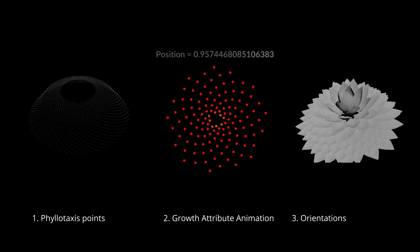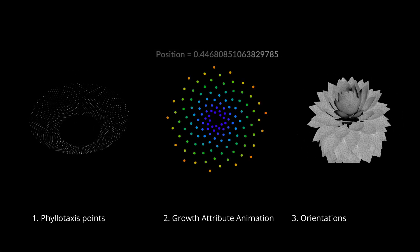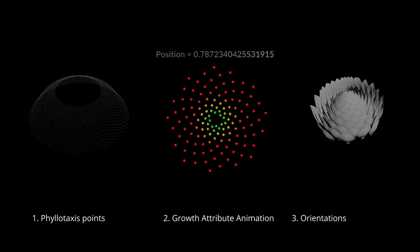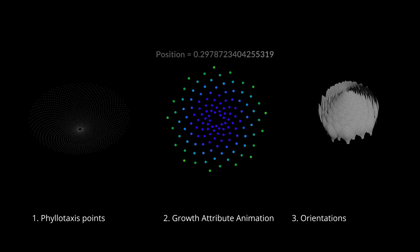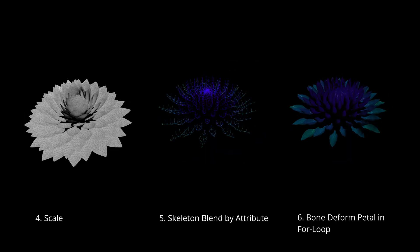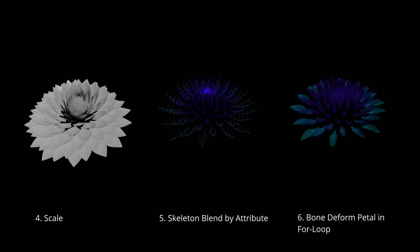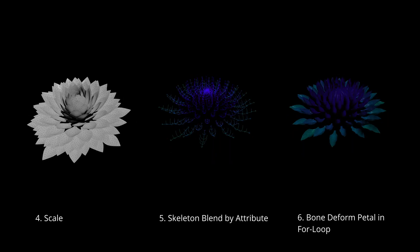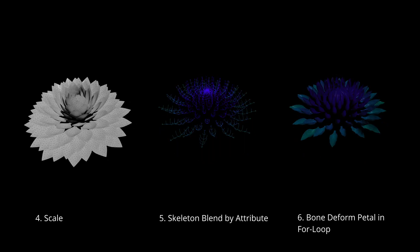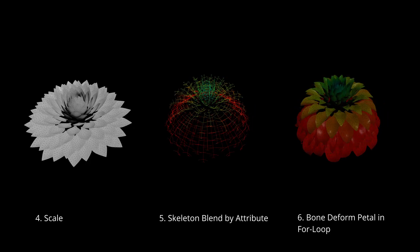In this video we'll start out by looking at a phyllotaxis point distribution setup, then we'll look at a setup to create a growth attribute animation, then we'll move on to some orientation of the petals, and also look at the scaling of the petals. After that we'll use our growth attribute to drive a skeleton blend between the bud pose and the bloomed pose, and then we'll look at bone deforming the petals onto the skeletons in a for-each loop.